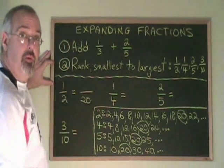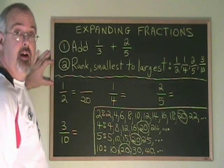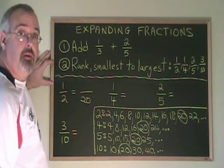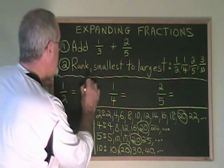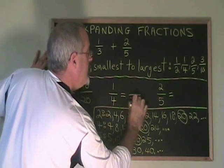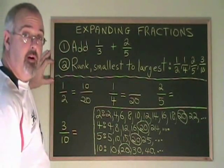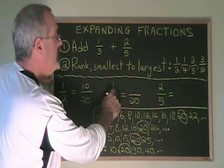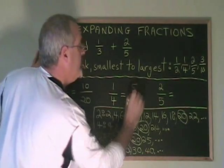To get 2 to turn into 20, I have to multiply it by 10. What I do to the bottom, I do to the top. So 1 times 10 is 10. To get 4 to turn into 20, I multiply by 5. So I multiply the top by 5. 1 times 5 is 5.